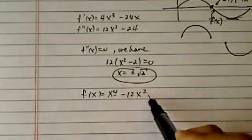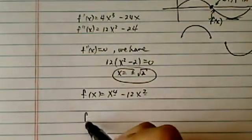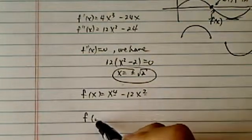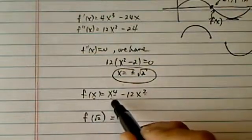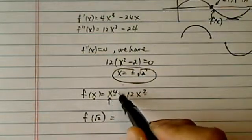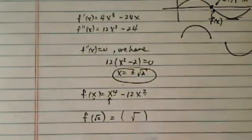Both terms are even functions, the 4th power and the square term, so positive and negative radical two will give the same result. Let's just evaluate one of them, say radical two. So f of radical two, I'm going to raise radical two to the 4th power.